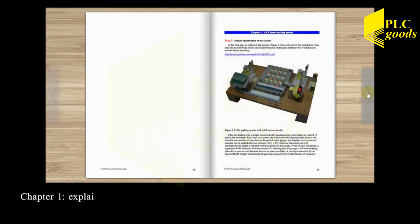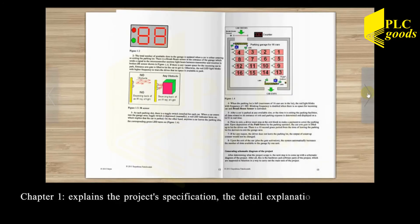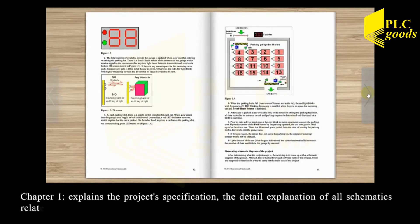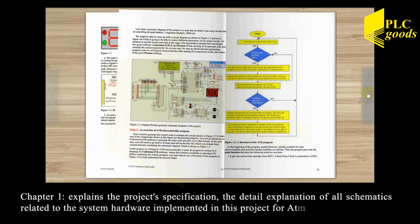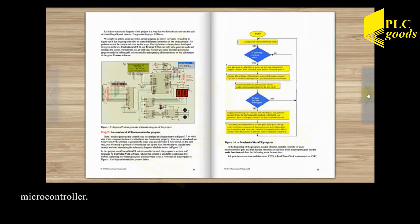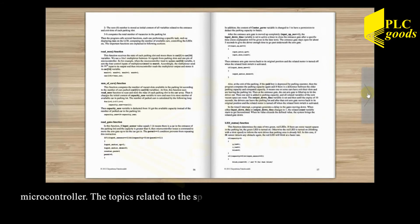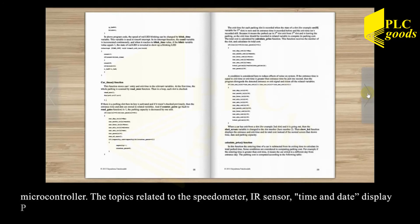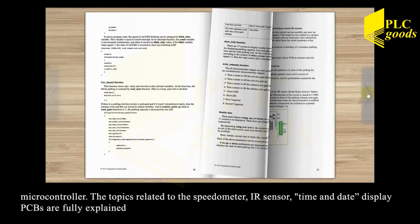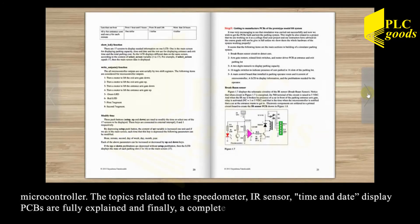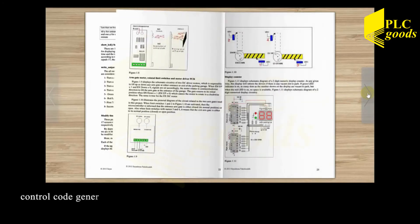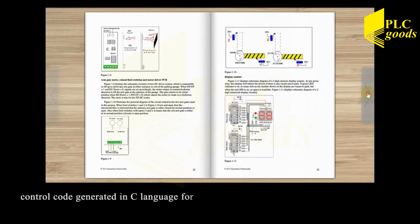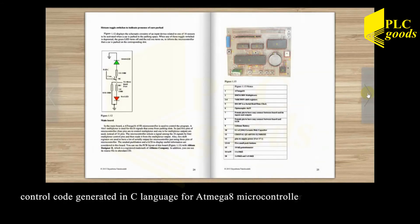Chapter 1 explains the project specification and the detailed explanation of all schematics related to the system hardware implemented in this project for the ATmega8 microcontroller. The topics related to the speedometer, IR sensor, time and date display PCBs are fully explained. Finally, a complete explanation of the control code generated in C language for the ATmega8 microcontroller is given.